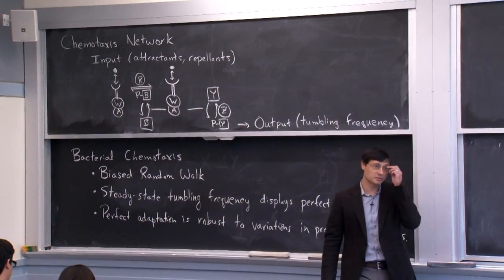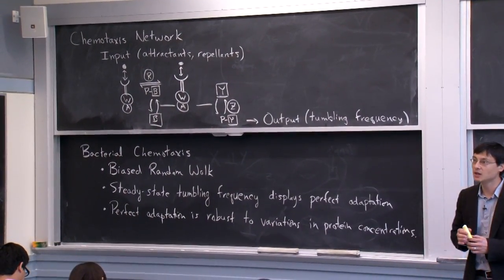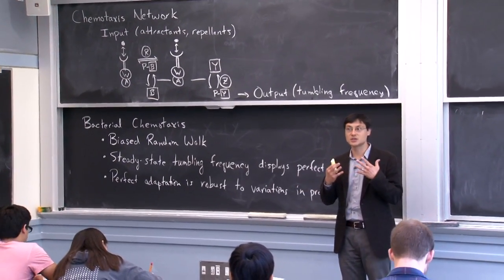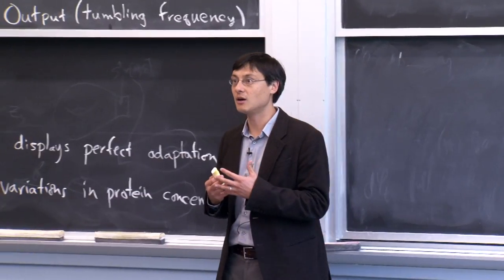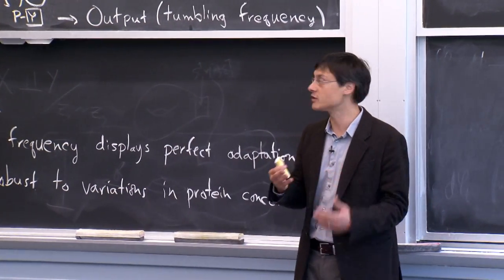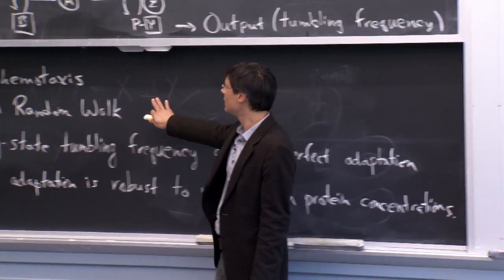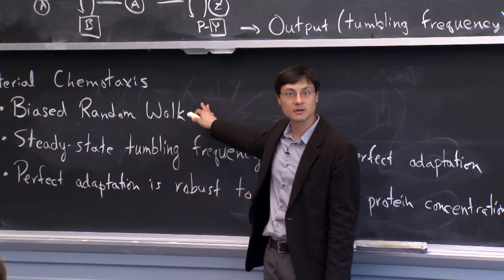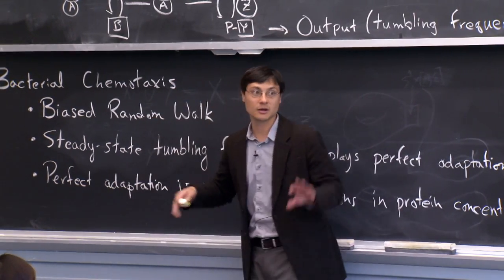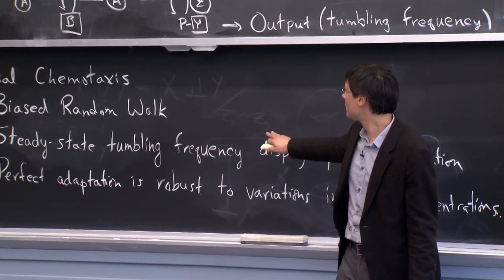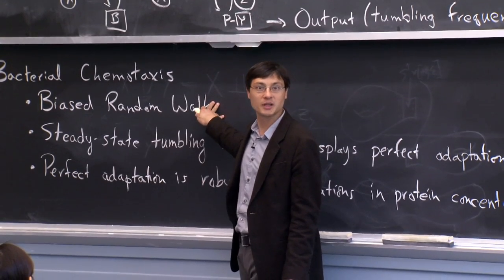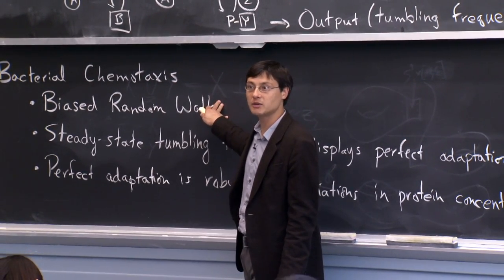Today we want to focus more explicitly on bacterial chemotaxis. The discussion we had on Thursday about life at low Reynolds numbers is certainly very relevant to the question of how bacteria are able to find food, or what constraints they face trying to solve this problem. We'll discuss in more depth the idea of the biased random walk — the runs and tumbles — that allow bacteria to swim towards attractants and away from repellents. There is something rather subtle about the particular biased random walk that bacteria implement.